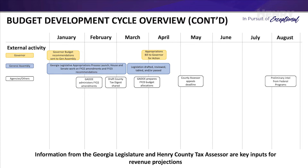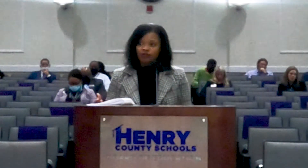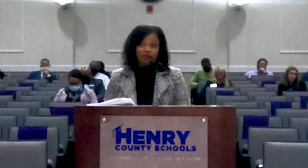We carefully monitor the news coming from the governor's office and the gold dome from January to April to identify and analyze the legislative activity and its impact on school system financials and our budget development process. To forecast the local revenues, we partner with the tax assessor's office to understand changes occurring in the local tax digest. This information begins to emerge in March and is continually refined until the assessor appeals process ends.